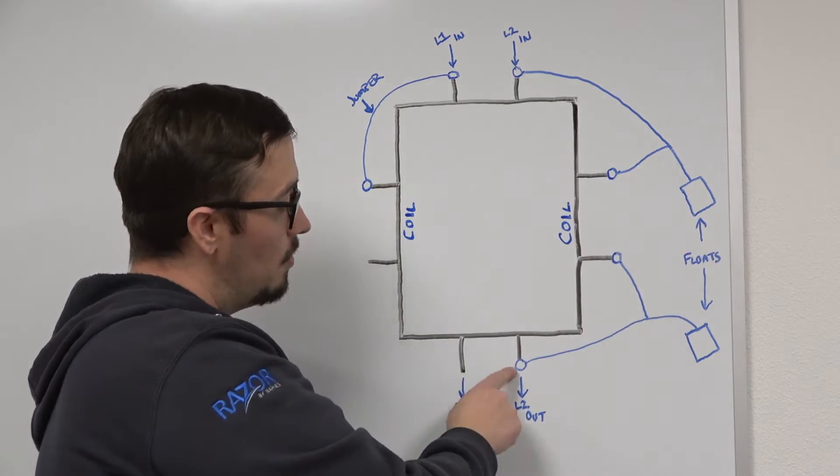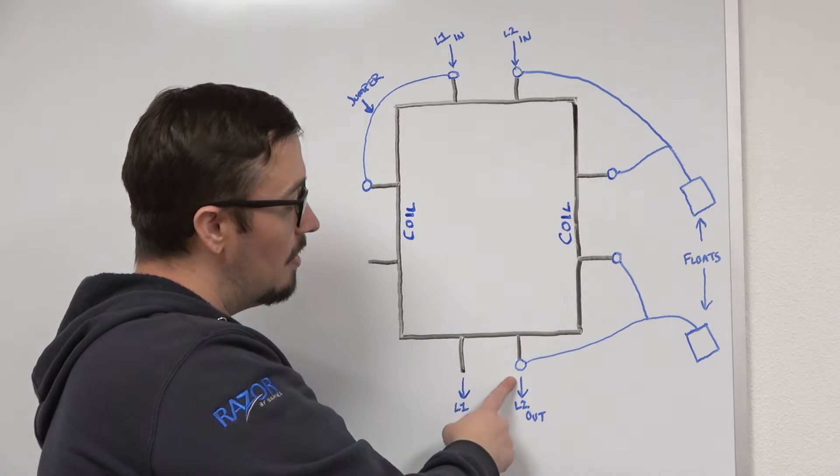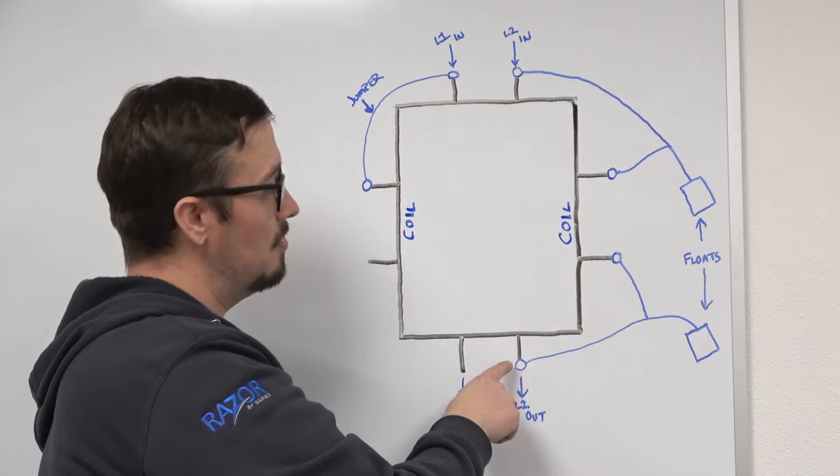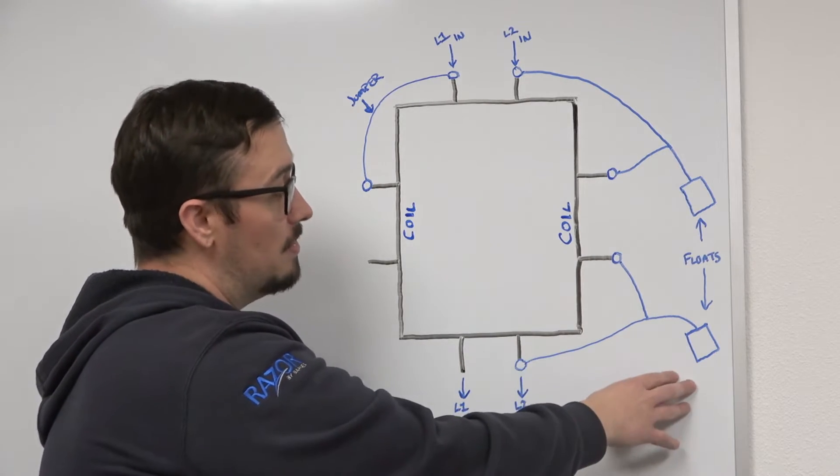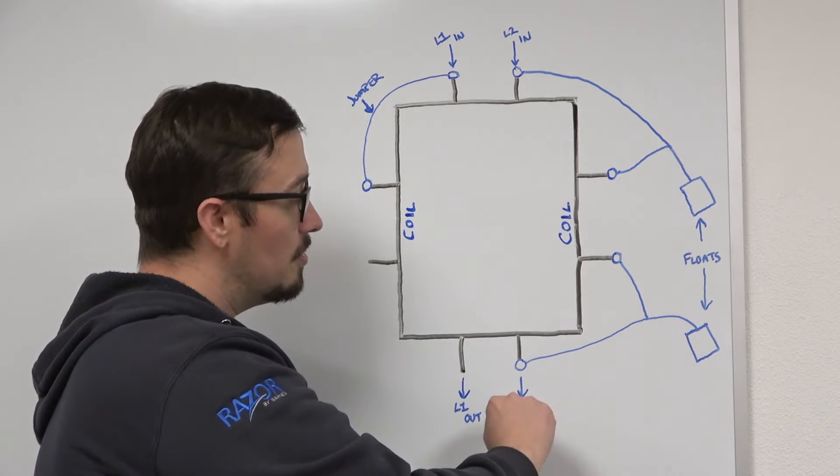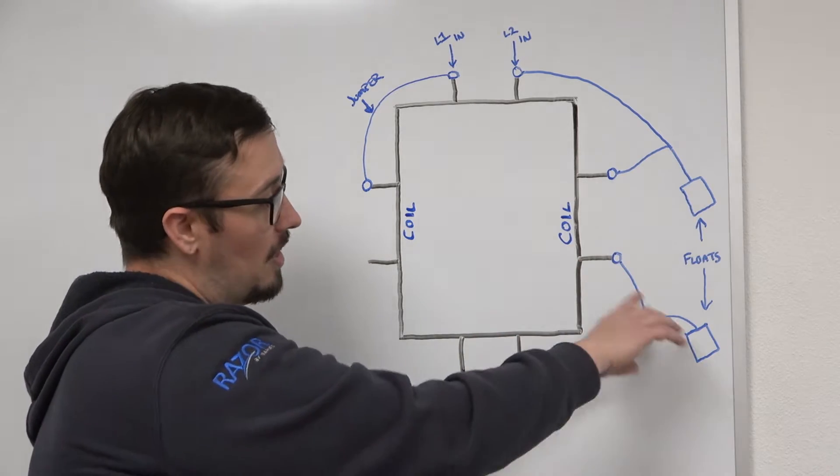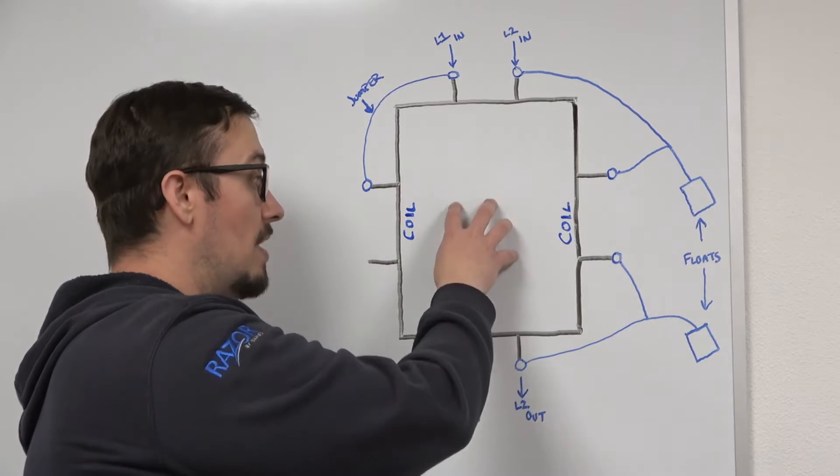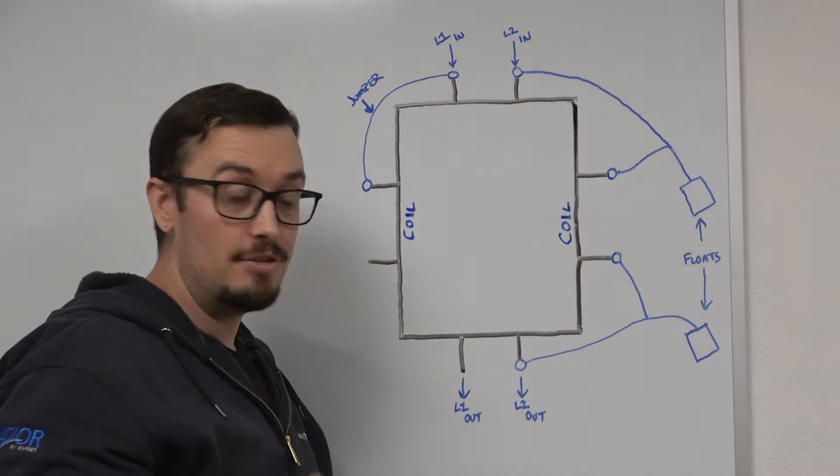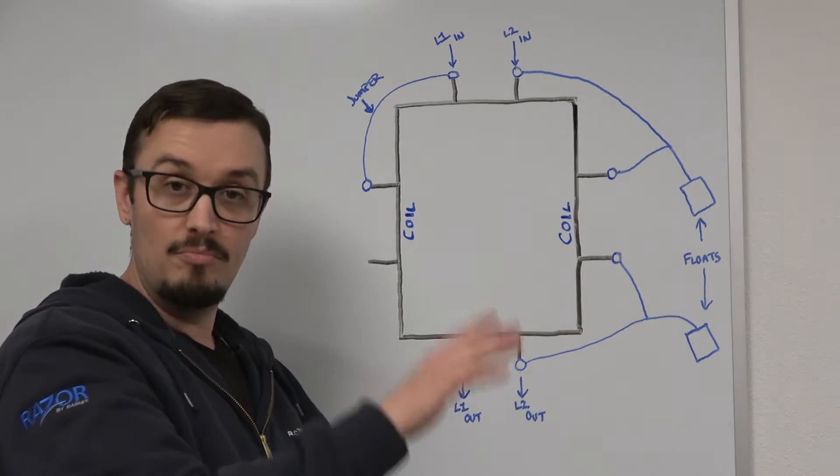As the contactor coil closes and sends energy through to this leg, this switch is actually what allows the power to be jumpered over to the coil from the pass-through side. This basically creates that holding circuit and keeps that relay or contactor engaged during the operation of both float switches.